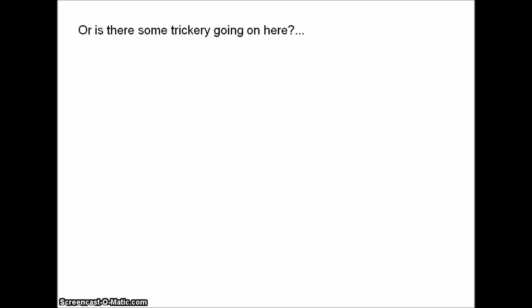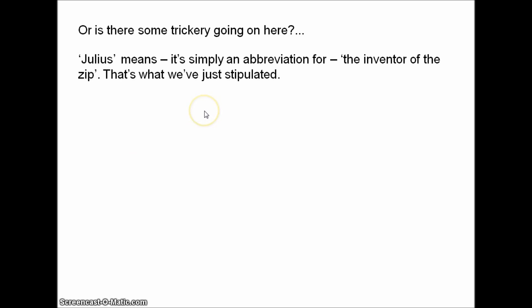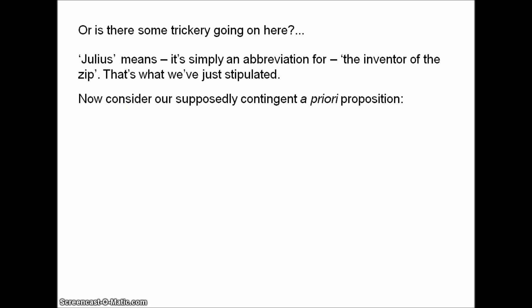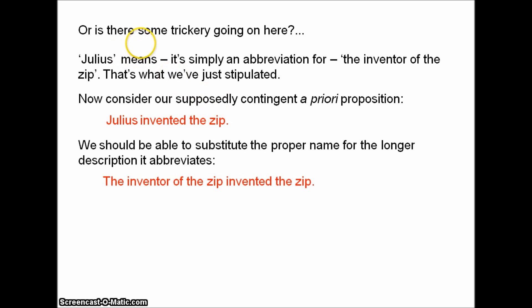You might feel there's a bit of philosophical sleight of hand in these examples. What does Julius mean? Julius is simply an abbreviation for 'the inventor of the zip' — that's what we've just stipulated. Now let's take our supposedly contingent a priori proposition: Julius invented the zip. Surely we should be able to substitute the name for the longer description it abbreviates, giving us: 'the inventor of the zip invented the zip.' But this can be read as necessarily true. So perhaps it's not contingent a priori after all. Julius has, at least in this context, precisely the same meaning as 'the inventor of the zip,' which is why this substitution is legitimate.